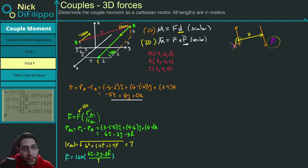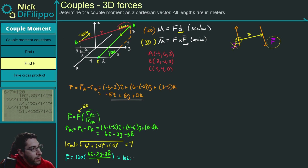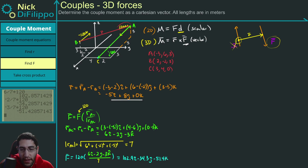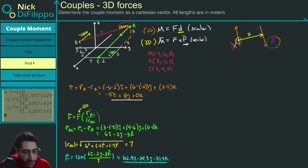So the force vector is F = 102.9i - 34.3j - 51.4k. Now I have my force vector and I need to take the cross product.